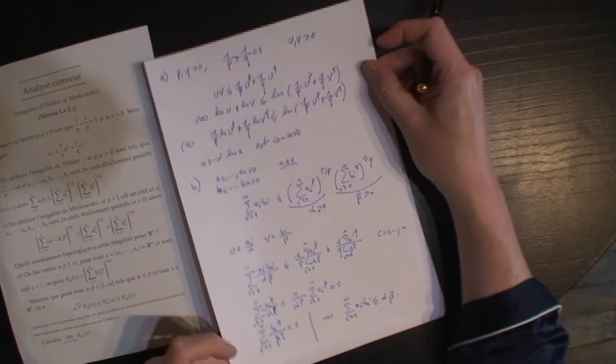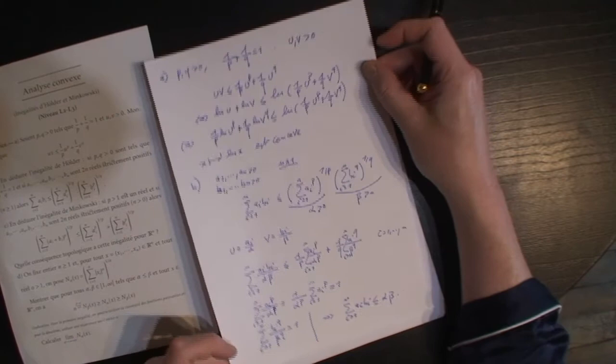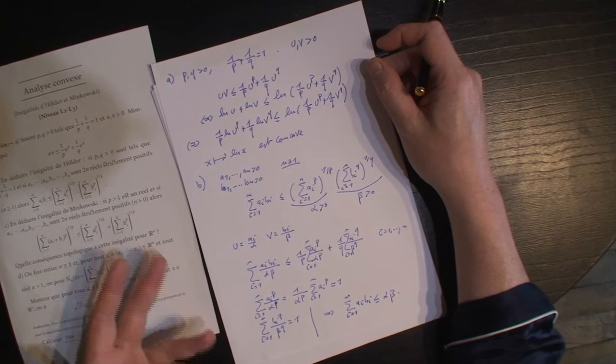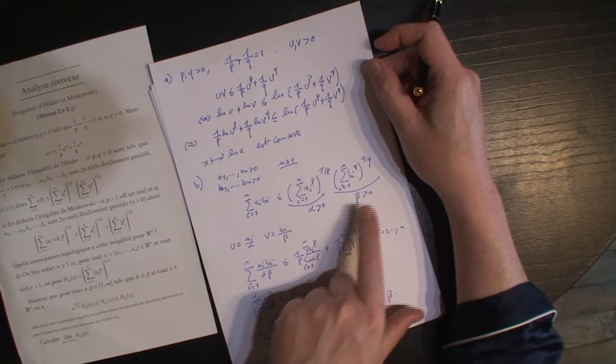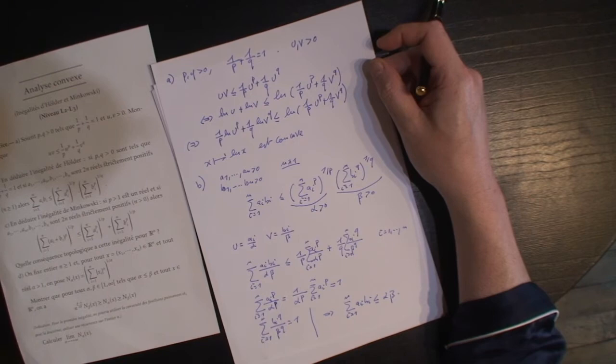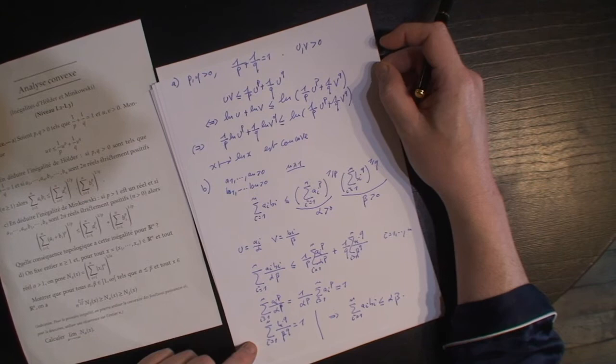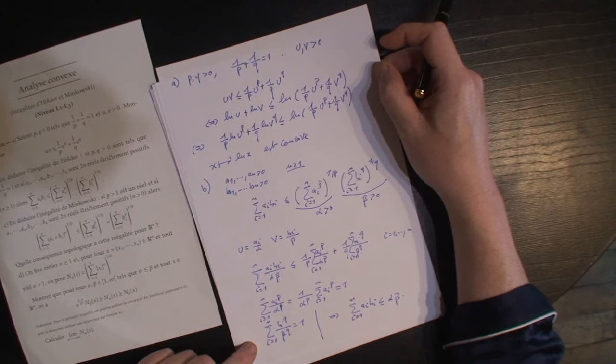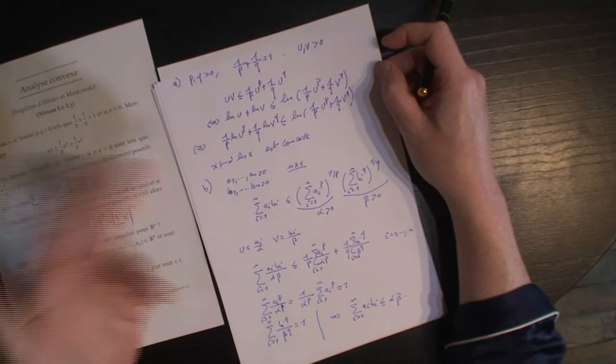Voilà pour Hölder. Un petit commentaire : c'est typiquement le truc où il n'y a aucun mérite à refaire cet exercice quand vous avez vu l'astuce — considérer α, β et prendre ce normalisé. Le seul coup de chapeau c'est celui qui a eu l'idée, il y a des centaines d'années. C'est typiquement le genre d'exercice qu'il faut avoir vu une fois dans sa vie et avoir compris qu'avec une petite astuce tout ça se ramène à l'inégalité de convexité.